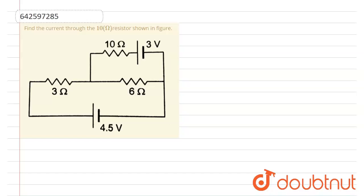In this problem, we have to find the current through 10 ohm resistor as shown in figure. That means we have to find the current over here which is passing through the 10 ohm resistance.